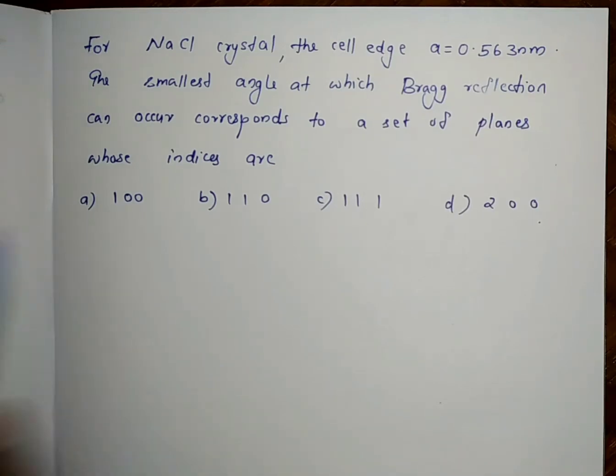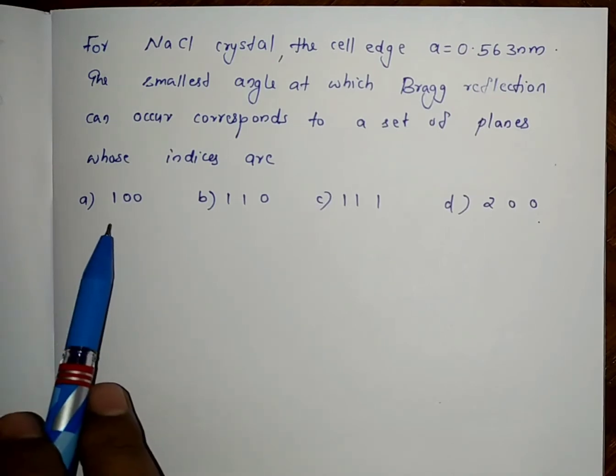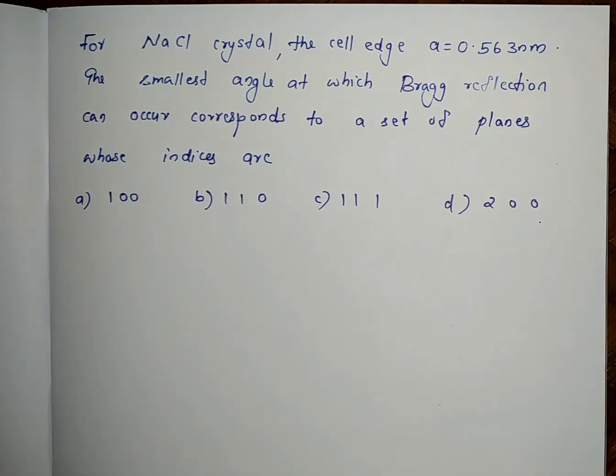For NaCl crystal, the cell edge a equals 0.563 nanometer. The smallest angle at which Bragg reflection can occur corresponds to a set of planes whose indices are 100, 110, 111, or 200.